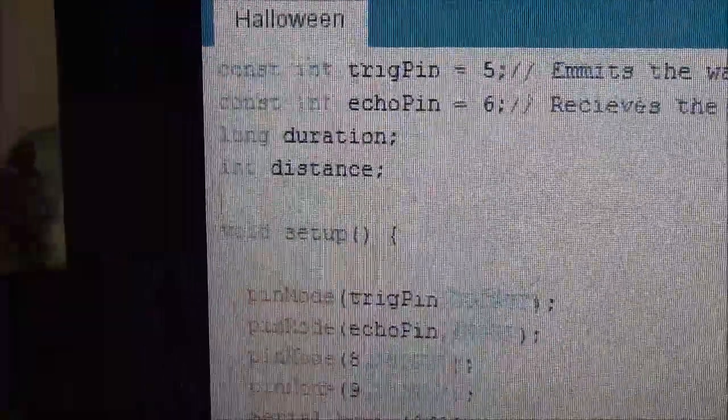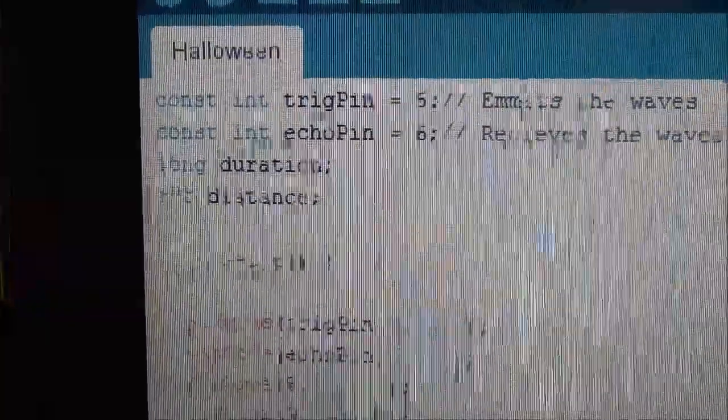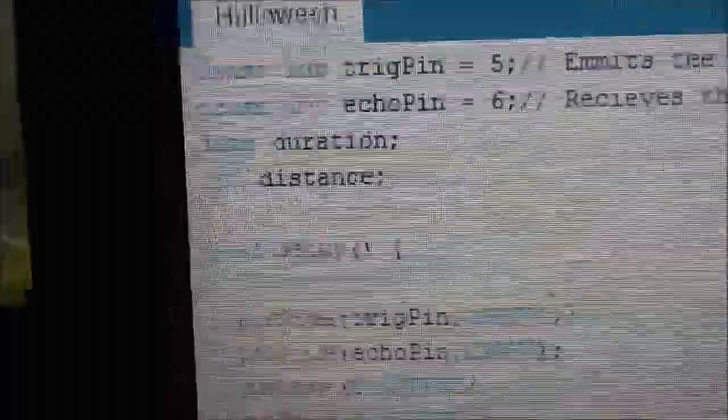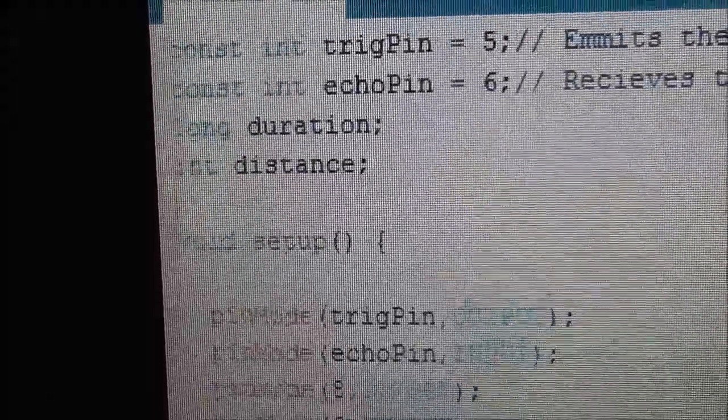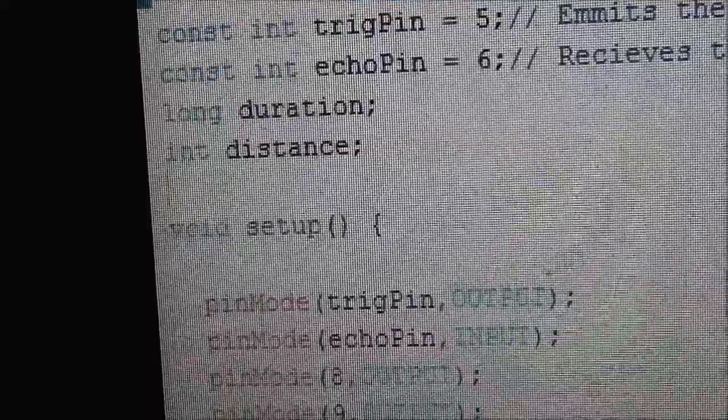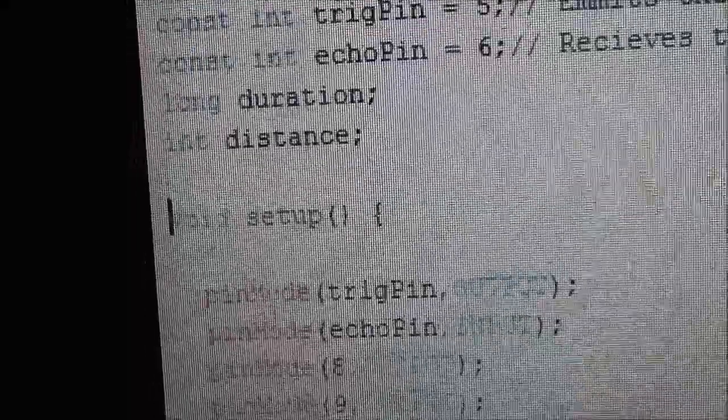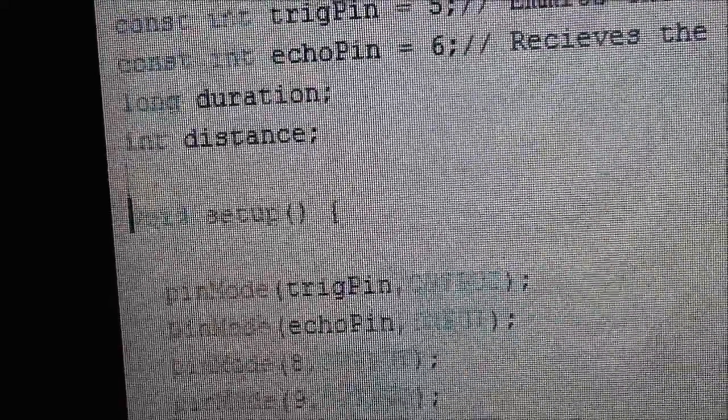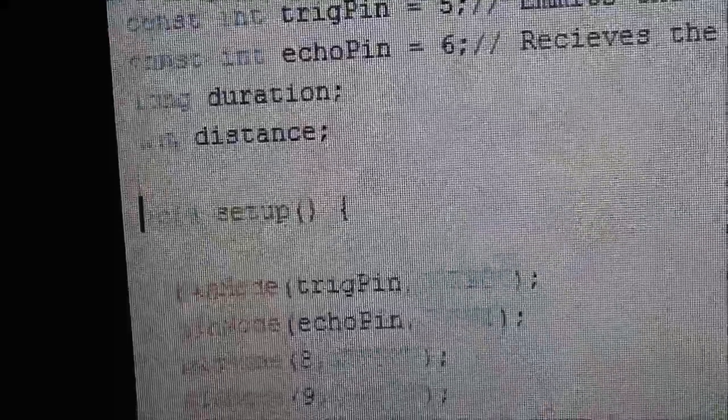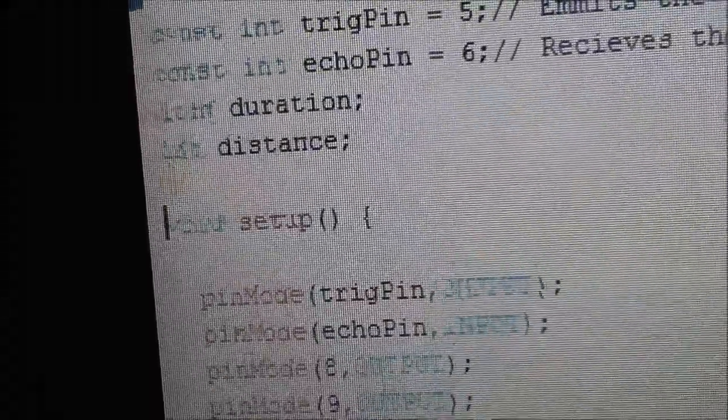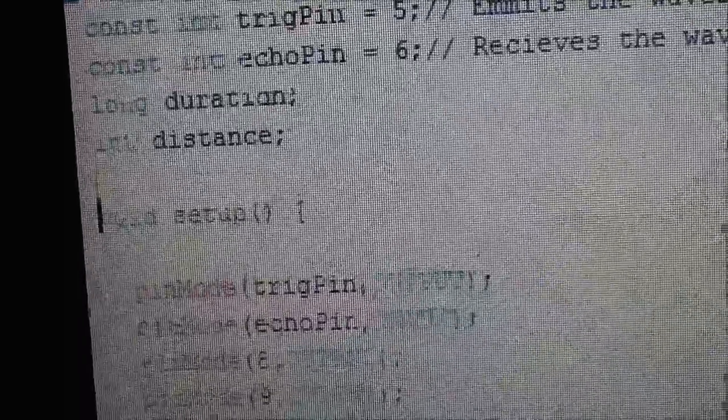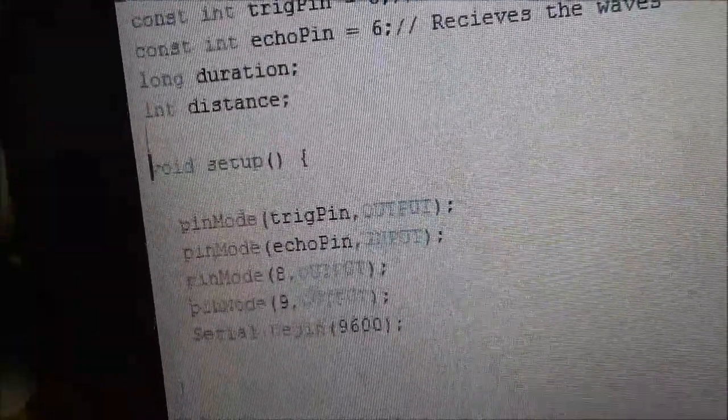So what the constant statement does is that it creates a read-only variable. Next I have defined another variable called duration, and I have used the long statement which is only used for longer variables. So this would have many decimal places and stuff like that. And then I have declared distance.